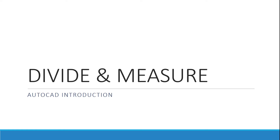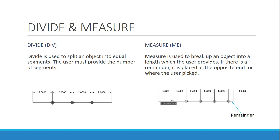The next thing is the measure and divide commands. These commands kind of work the same. When I'm using the divide command, AutoCAD is going to divide the object and figure out whatever distance that's going to be. All I have to do is say, hey, I have this line and I want to divide it into four segments. So what it's going to do is create some nodes at different locations and divide that line for me.